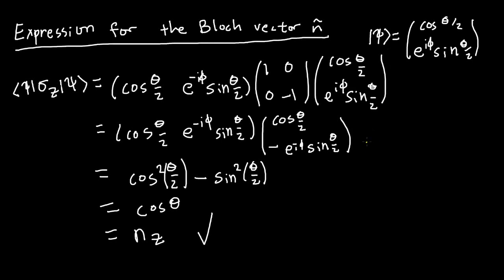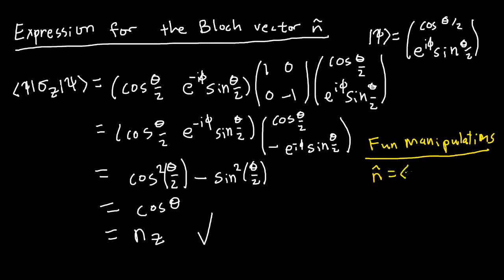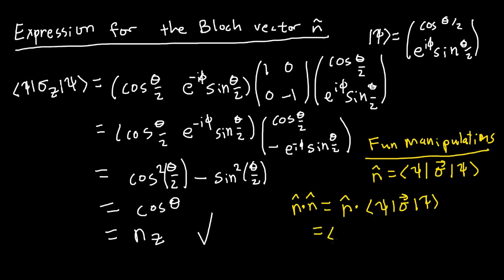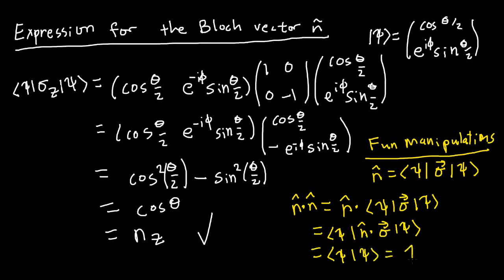One of the fun things about this expression is the manipulations it allows. For example: n-hat dot n-hat = n-hat dot ⟨ψ|σ⃗|ψ⟩ = ⟨ψ|(n-hat dot σ⃗)|ψ⟩. Since psi is an eigenvector of n-hat dot sigma with eigenvalue 1, this equals ⟨ψ|ψ⟩ = 1. So n-hat must be a unit vector, as expected. I think manipulations like this are kind of fun.